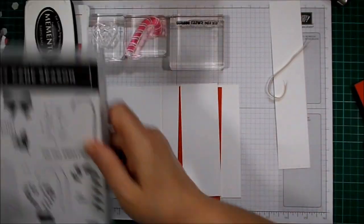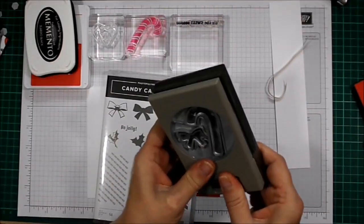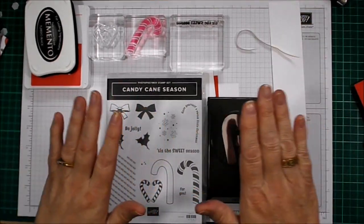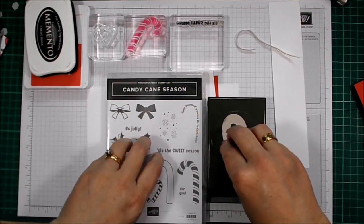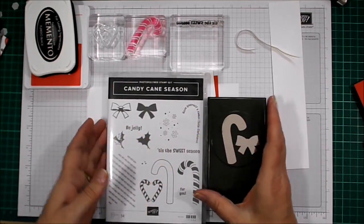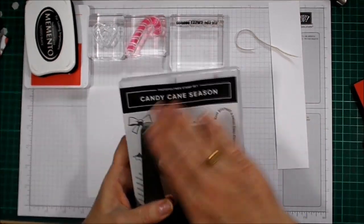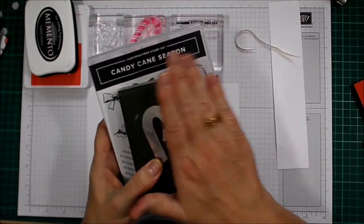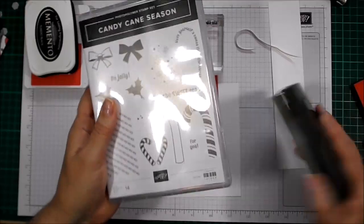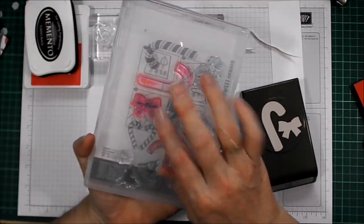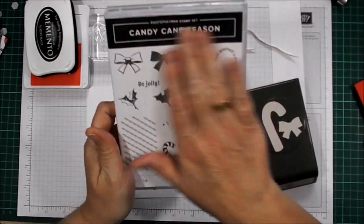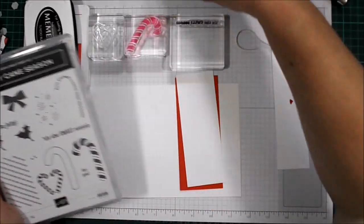All I'm using for today is the Candy Cane Season bundle that's just come out in our new Christmas catalogue release. I think this is between $50 and $70, so it's not bad. You get a punch that you'll be able to use forever, as well as a lovely photopolymer stamp set that's got sentiments in, as well as a lot of nice stamps.